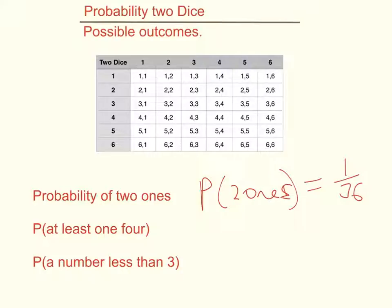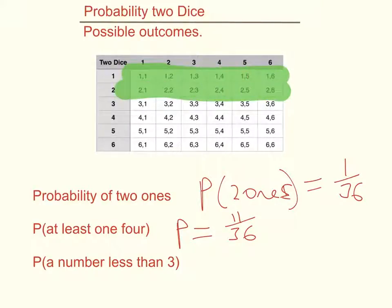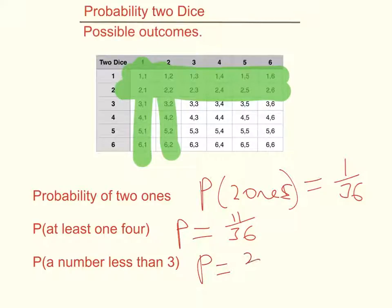Now let's look at getting at least one four. To get a four, I need to be in this column or in this row. There are six in each, but one of those is shared, so there are actually only 11 favorable outcomes. So the probability is 11 over 36. For a number less than three — meaning a one or a two — there are quite a few places in the table. These two rows and these two columns all have a number less than three, giving 20 favorable outcomes. So the probability of getting a number less than three is 20 over 36, which simplifies to five ninths.